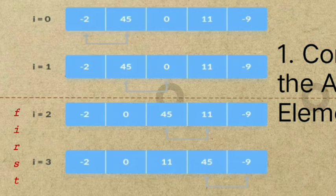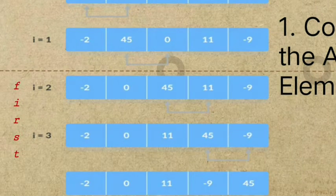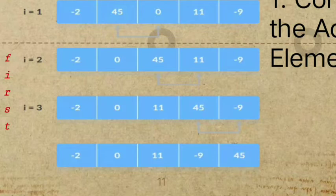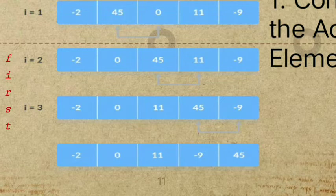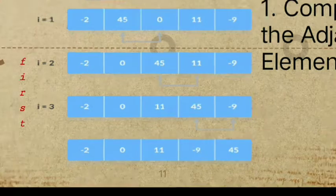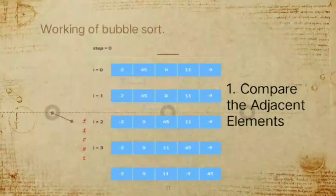Since 45 is greater than 0, which is true, the elements will be swapped. We then go to the third and fourth elements — 45 is greater than 11, so they swap. Next, the fourth and fifth elements: 45 is greater than negative 9, so we swap again. The same process goes on until the last element.